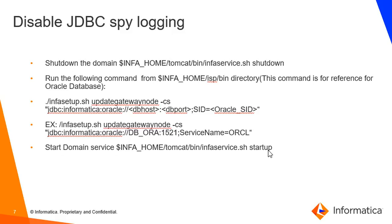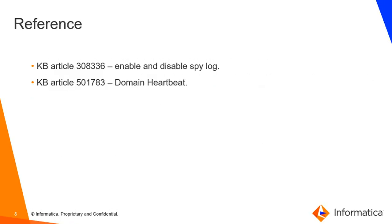To disable JDBC spy log: as already mentioned, it is not recommended to enable JDBC spy log for a longer period. Once the issue reoccurs and you are able to collect the JDBC spy log, you can disable it. To disable, shut down the node first and run the infosetup.sh update gateway node command with the INFA_CS option. While running this command, remove the spy attributes, then start the services.